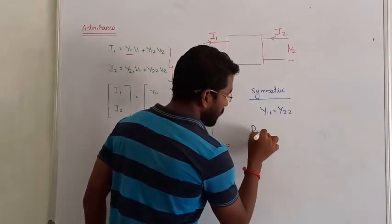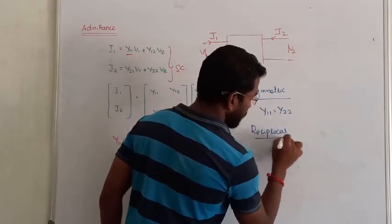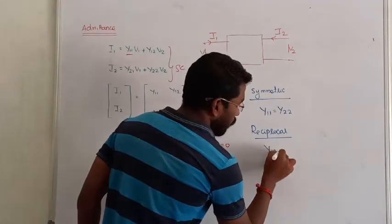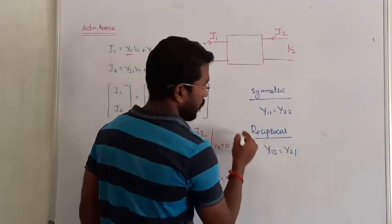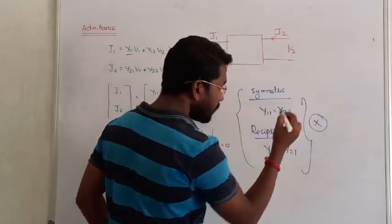Next, reciprocity. We already saw the procedure to check whether the given network is reciprocal or not. The value of y12 must equal y21. These two conditions are mandatory. Don't forget, that is very important.